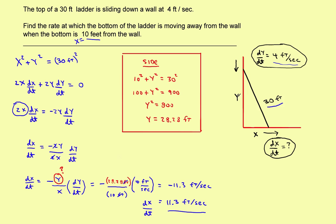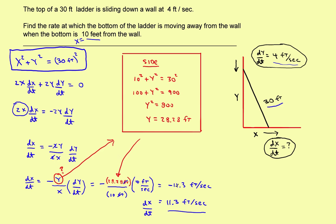To review: draw a picture and label the things that you know and don't know. Find an equation that ties everything together — in this case, the Pythagorean theorem. Anything that stays constant through the whole problem you can plug in immediately. Find the derivative and solve for the thing you're looking for, which here is dx/dt. When you start plugging in numbers, occasionally something will be missing — just go off to the side, do a little side calculation to find the missing part, bring it back and plug it into the formula. Then stick it on a calculator, get the answer, and you're done.